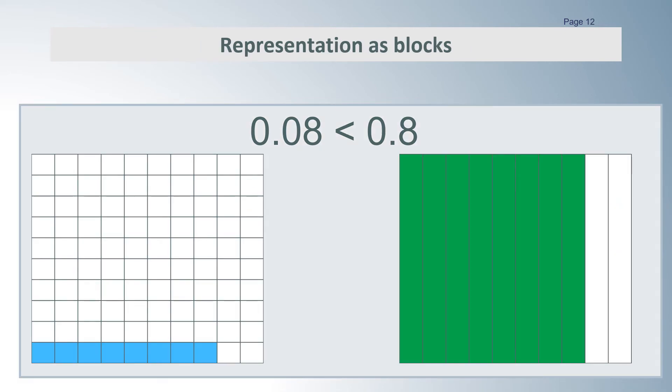Let's have a look at what those values look like. Each of the grids shown here represents 1. The 1 on the left is divided into 100 squares. The 8 blue squares represent 8 hundredths or 0.08. The square on the right is divided into 10 rectangles, each of which is 1 tenth or 0.1. The 8 green rectangles represent 8 tenths or 0.8, which is also 80 hundredths. You can see that 0.8 is greater, in fact 10 times the size of 0.08.